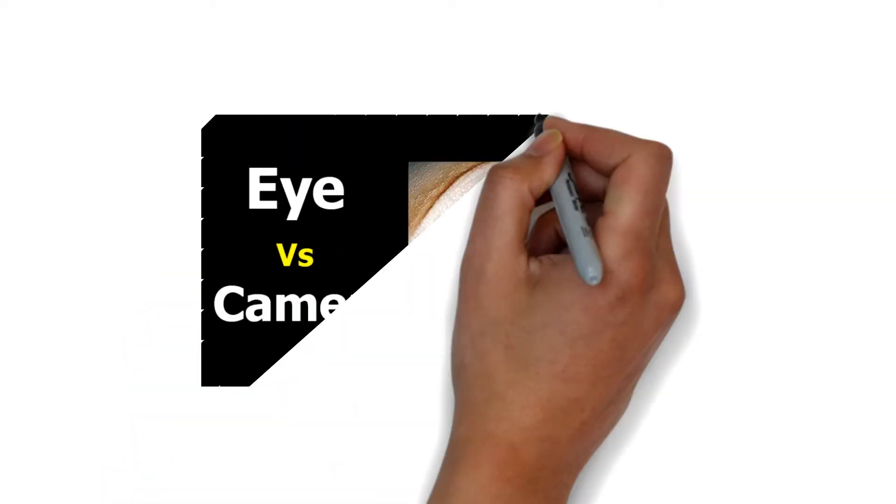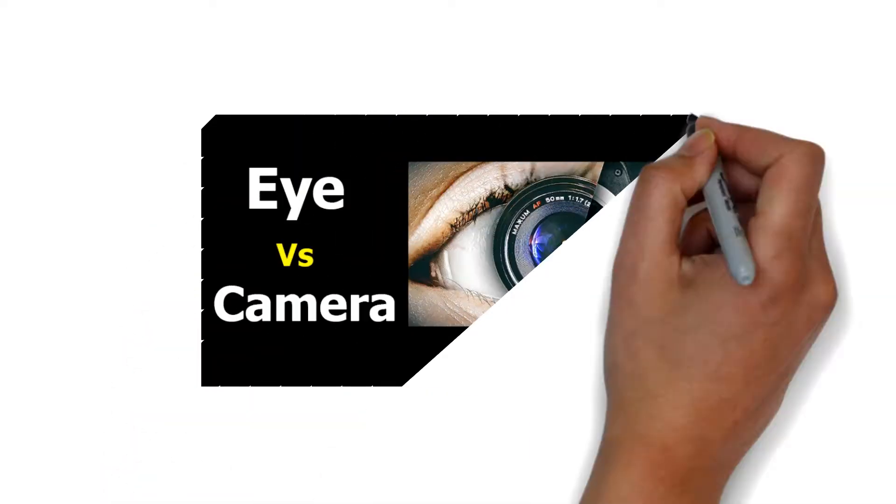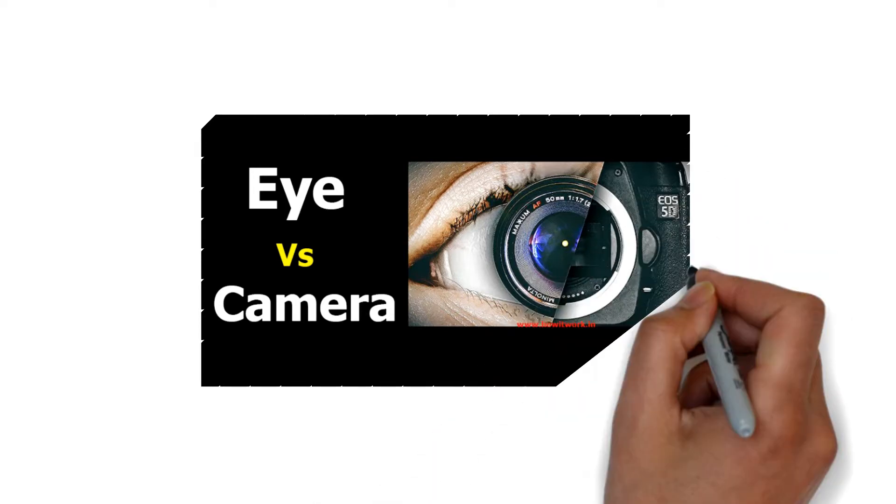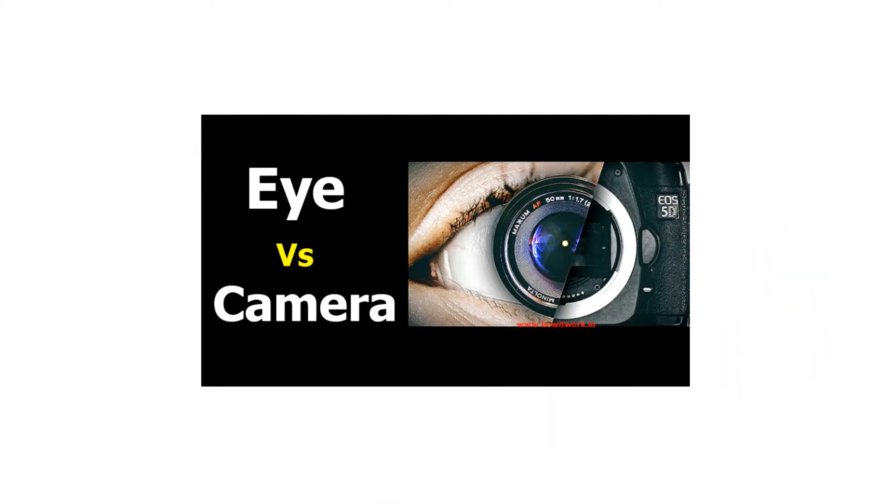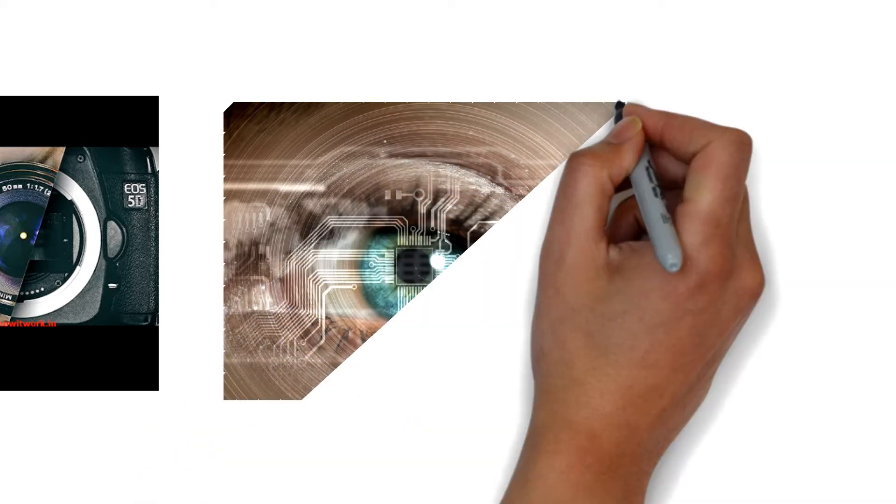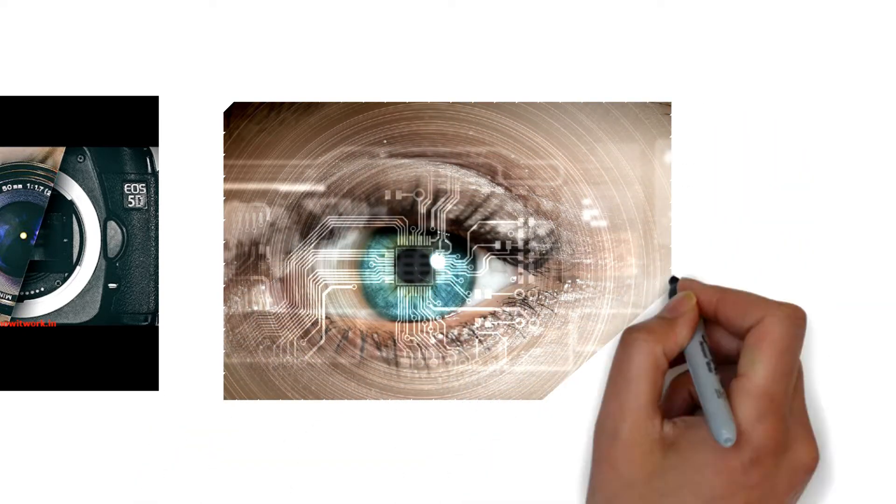First of all, we have to understand the difference between an eye and a camera. Unlike cameras that shut down after power off, eyelids are simply closed. But the retina and the brain work on day and night.